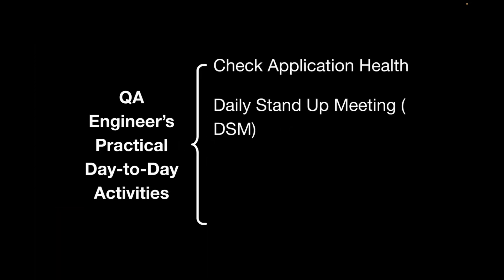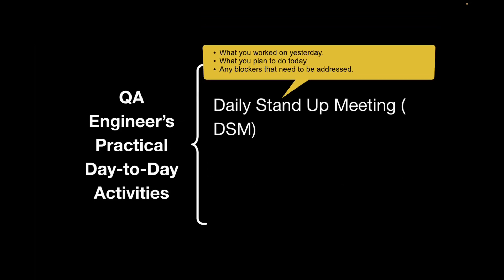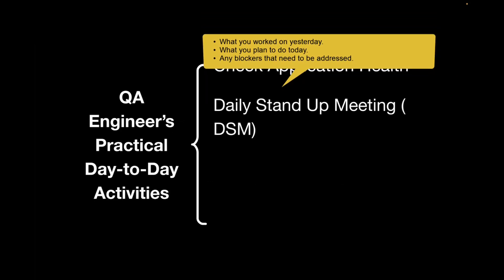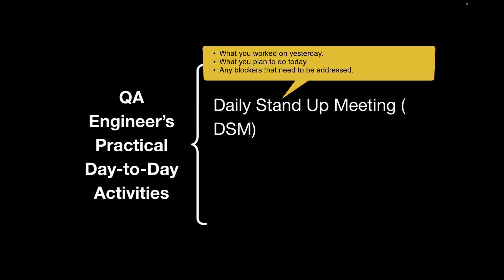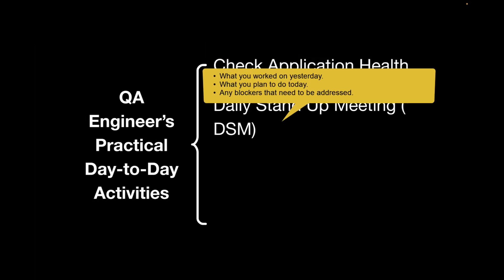Next is the daily stand-up meeting, or scrum meeting — also called the DSM. Here the team discusses three key points: what you worked on yesterday, what task you are planning to pick up today, and if there is any blocker that needs to be addressed. This is a very short meeting, generally 15 minutes, in which everyone shares their update and any blockers.